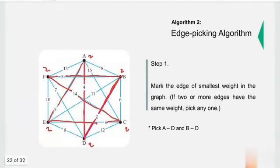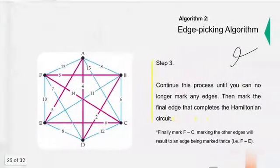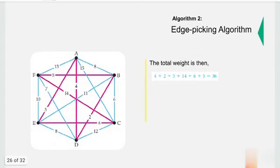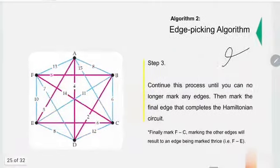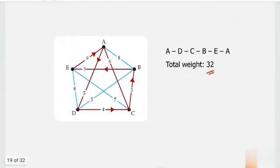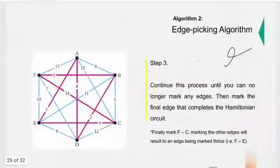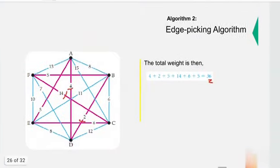So if I start at A, my route will be A, then E, then C, then F, then B, B to D, and then D to A. That's a route. I'll get the sum: 4 plus 2 plus 14 and so on equals 36. Now which one resulted to the smaller weight? 32. So in this particular graph, the greedy algorithm resulted to a smaller sum.